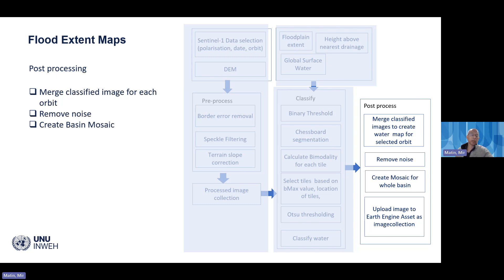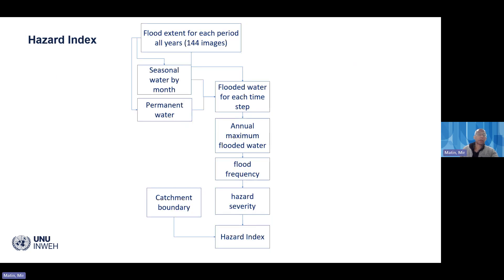The water extents from all orbits are combined to create a mosaic for the whole basin, and this data is uploaded to Google Earth Engine as a collection for further processing. The whole process is automated using Python scripts and Google Earth Engine for generating, processing, collecting and producing the mosaics. For hazard analysis, we use one image every 15 days of water inundation for the whole basin to generate seasonal inundation maps — inundated areas during every monsoon season.